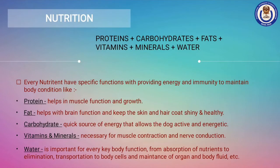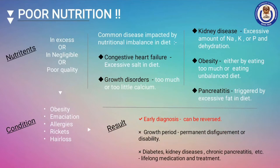Nutrition, as we all know, is a combination of protein, carbohydrates, fats, vitamins, minerals, and water. These are required in a proper amount for a healthy body, and this is true for both humans and their best friend. We all know that excess of anything is bad for health, and the same goes for a dog's diet. If any nutrient is excess or lacking in quantity, it may cause obesity, emaciation, allergies, etc.